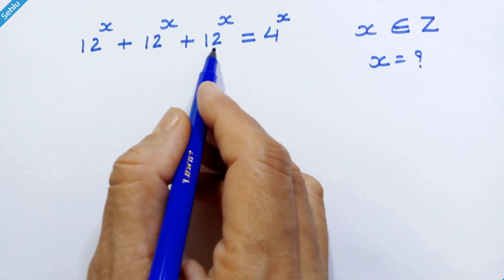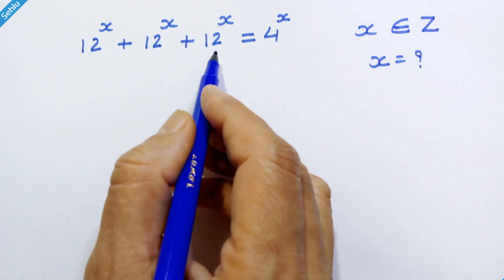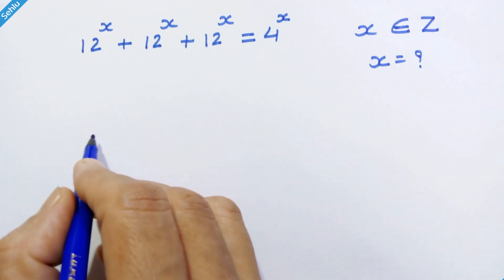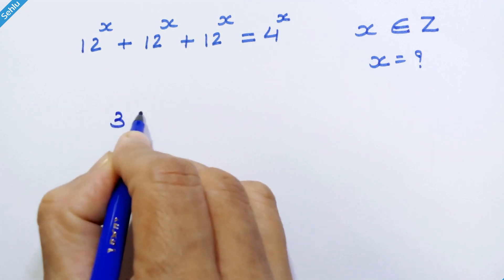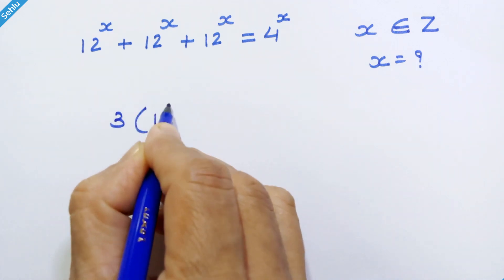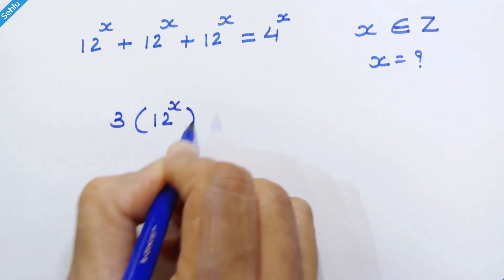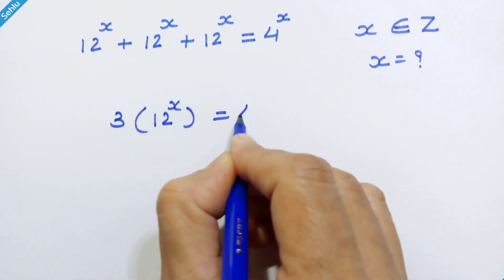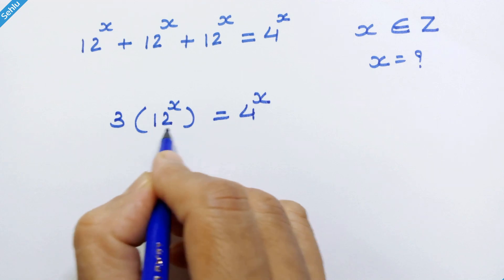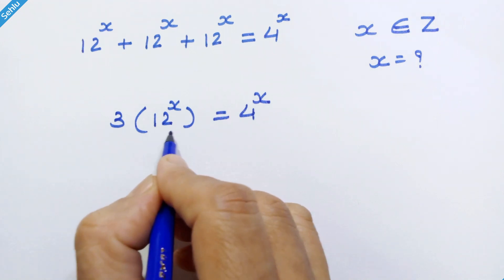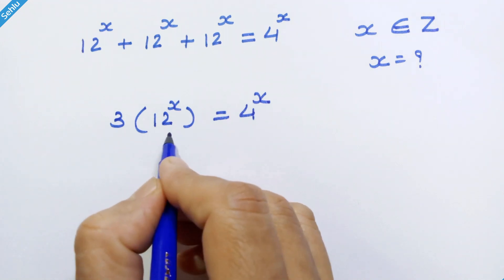Here we have 3 times 12 raised to x. So we can write this as 3 into 12 raised to x is equal to 4 raised to x. Now, 12 is 3 into 4.